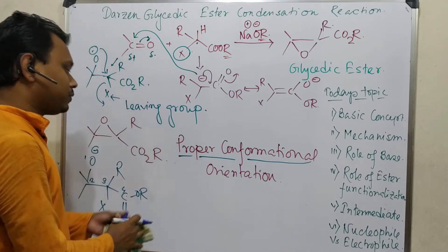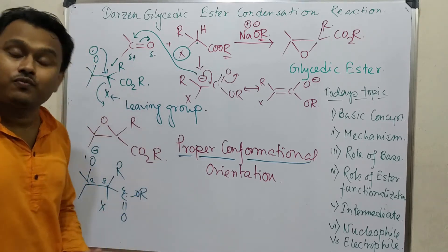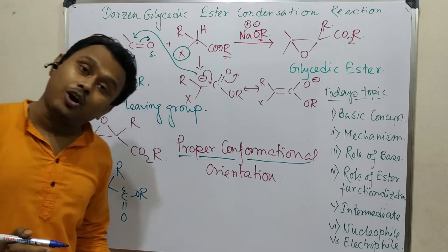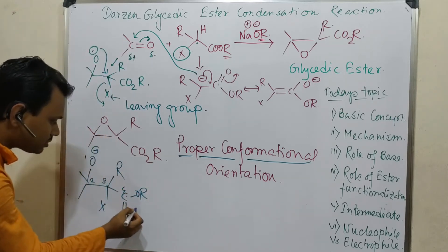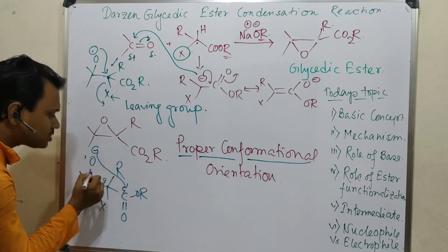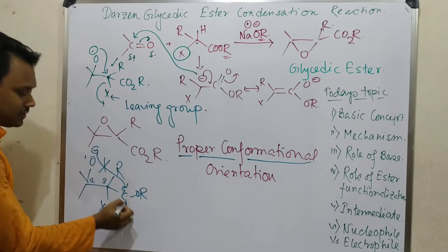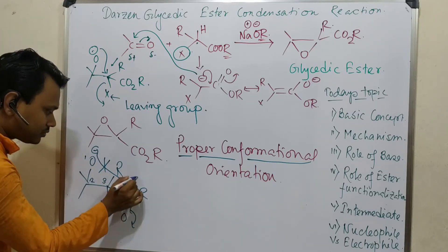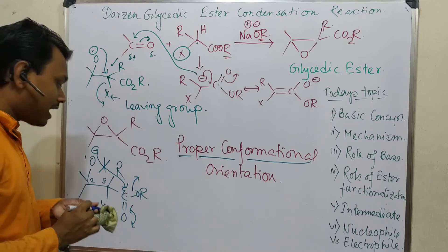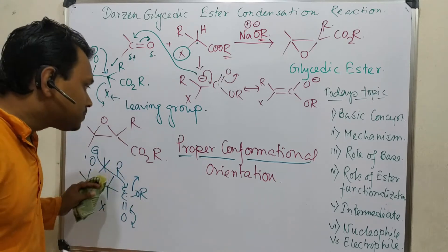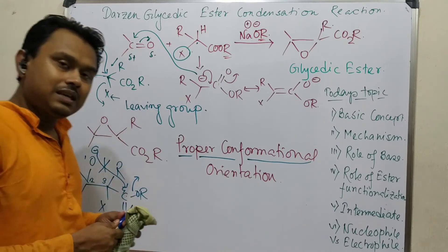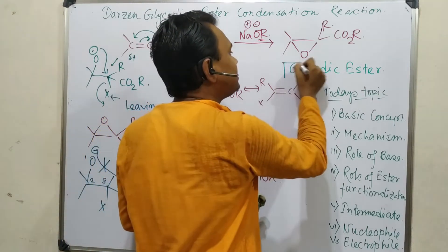Logically you may think that this O minus can attack here. So if we consider that, what will be the ring? Number 1, 2, 3, 4. And as I told just some time before, four-member ring formation is not favorable because of lack of proper conformational orientation. This reaction - attack of this O minus - will not happen. It will come, it will come back, it will leave.